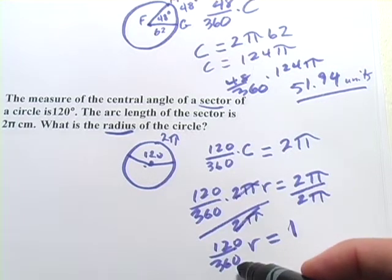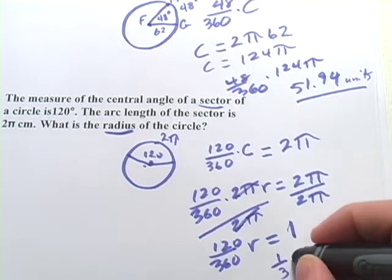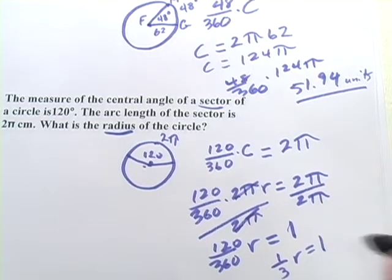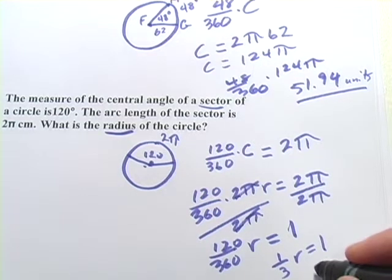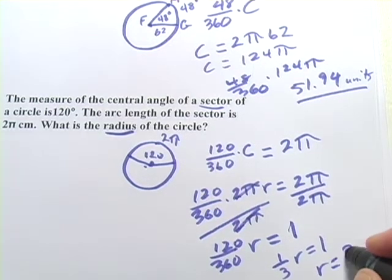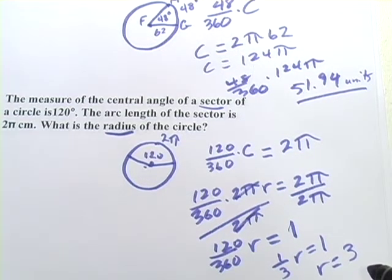And then I notice that 120 over 360, that's the same as 1 third if I reduce the fraction. So 1 third r equals 1. Now to get r alone, I simply multiply both sides by 3, and I get r equals 3. So that's a little bit of work with finding arc lengths and of sectors of circles.